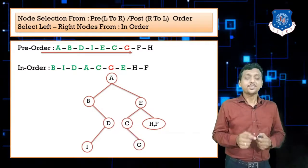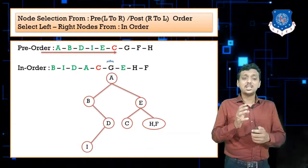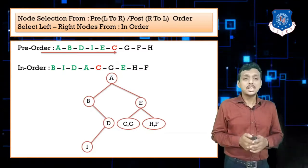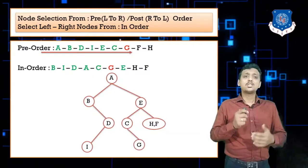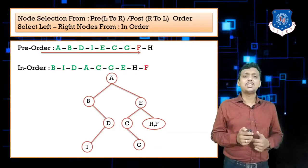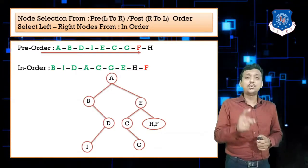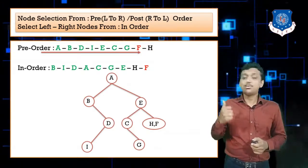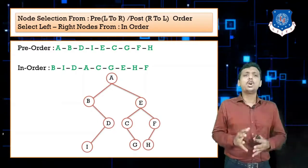Continuing: from pre-order, after E we select C. On the left side of C there is nothing, and G is on the right side. Next, from the sequence H and F, we select F first (from pre-order), and H goes to the left side of F. The binary tree from the given pre-order and in-order sequences is now completely built.